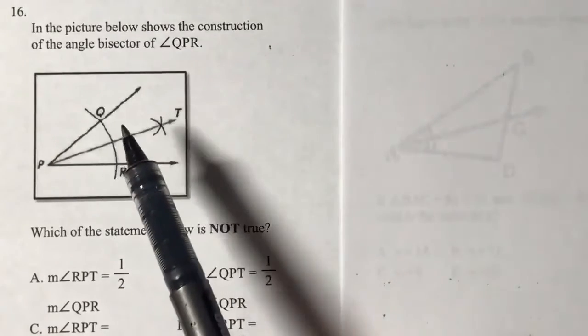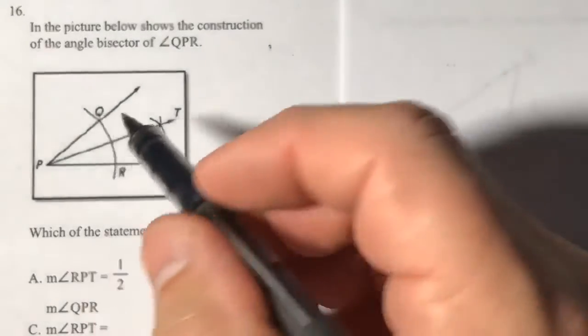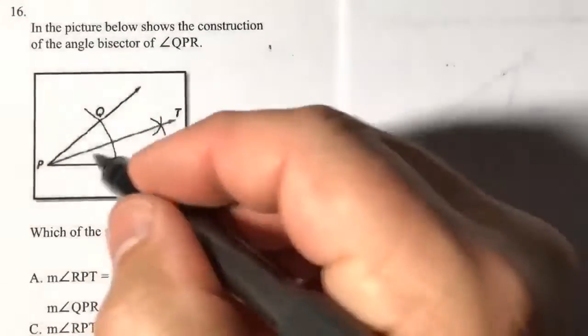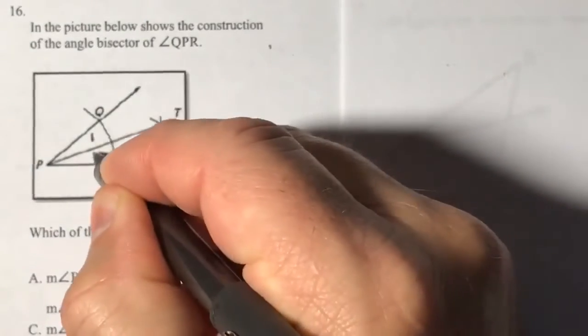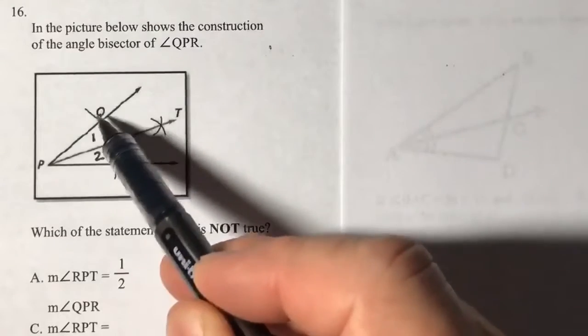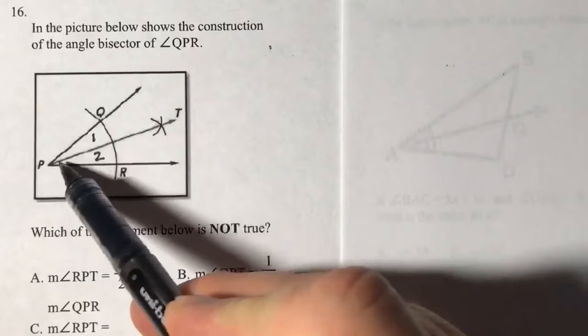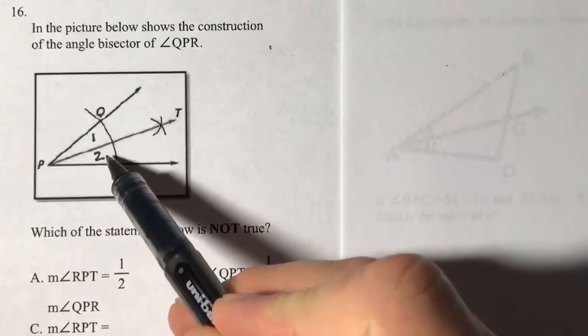The bisector does what? These are the two equal parts, right? Let's go ahead and refer to those equal parts with a 1 and a 2. This 1 and 2 are my equal parts. My bisector right here is PT. It's dividing QPR into these two smaller equal angles.